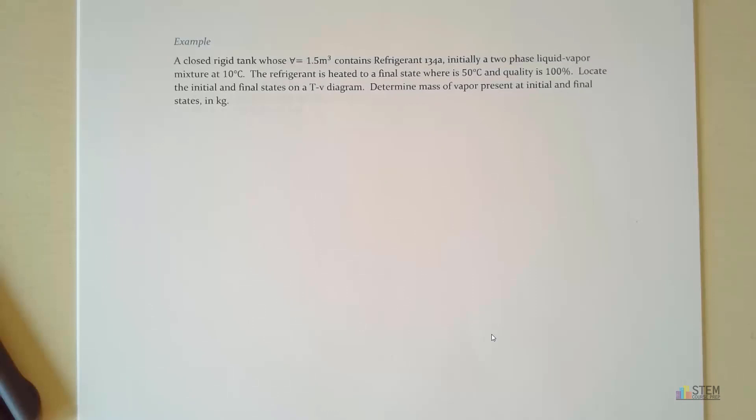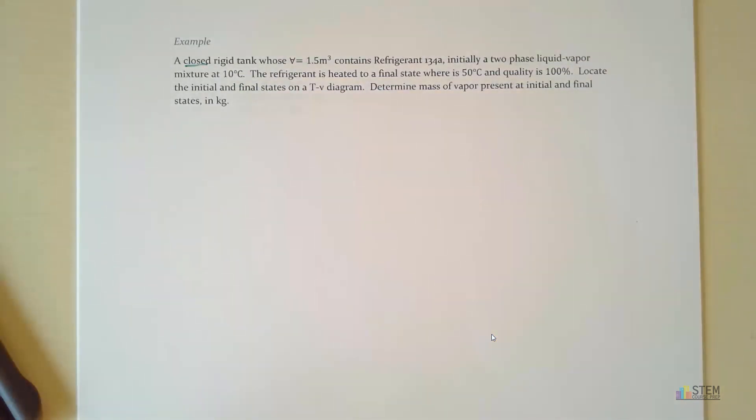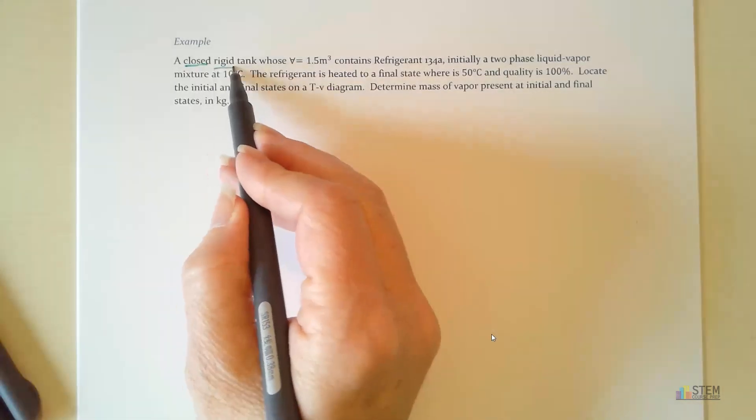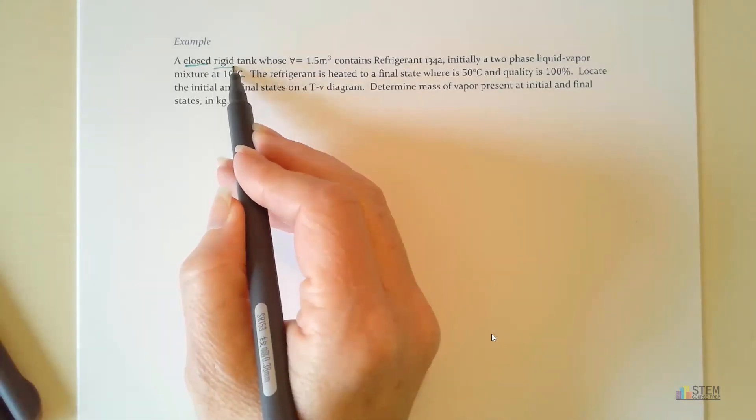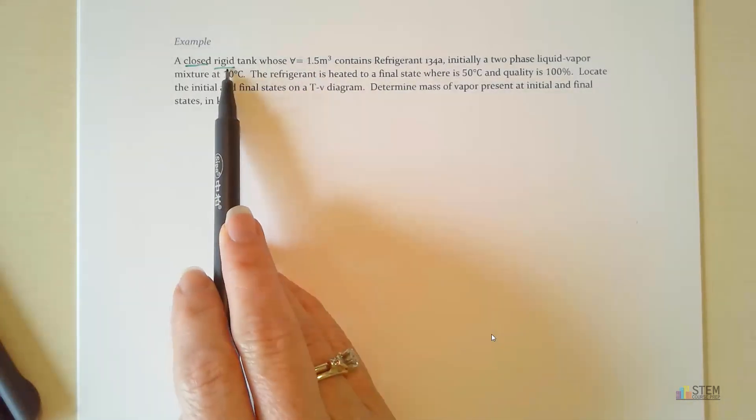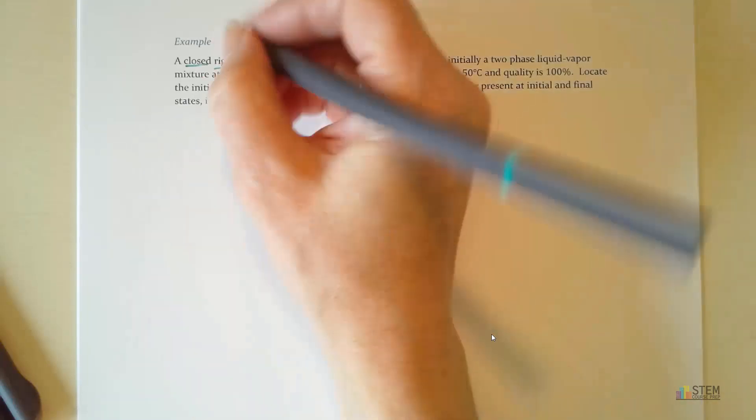Let's look through here and pull out the key terms. Remember, we always want to look for our keywords. Closed, that's a good one - it means we don't have any mass flowing in and out. Rigid tank, that is a keyword. If we have a rigid tank, you can pretty much assume volume is going to stay constant. So unless it's telling you otherwise, if it states you have a rigid tank, volume will be constant.